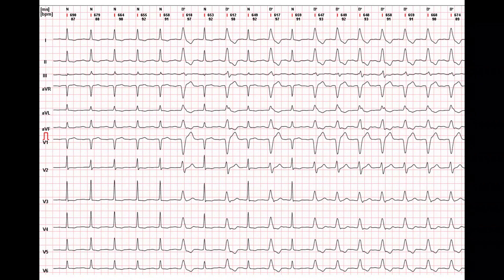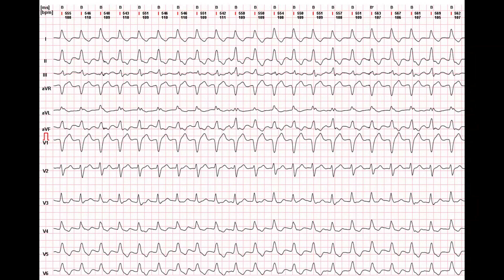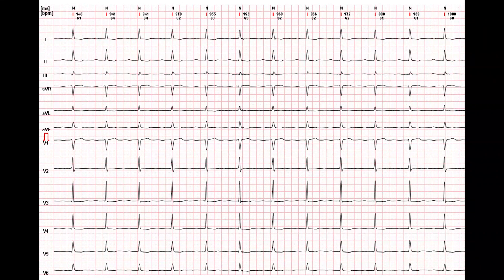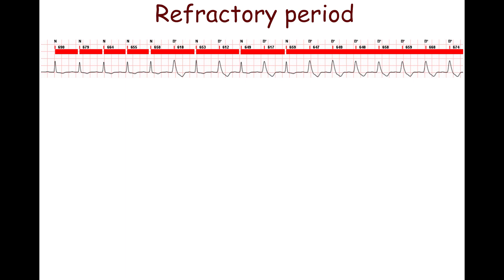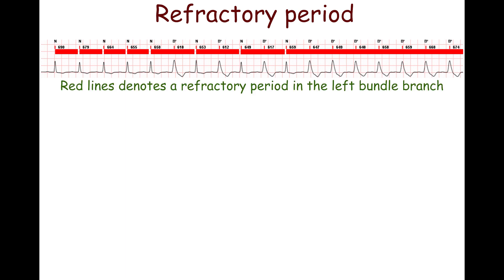In this individual, left bundle branch block only appears at heart rates above 92 BPM. Thus, the QRS complexes are wide during tachycardia and narrow at a normal heart rate. This phenomenon is explained by prolonged refractory periods in one of the bundle branches.